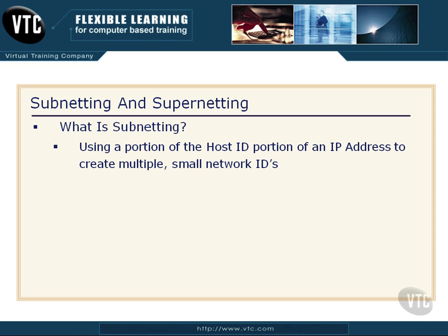Now, what is subnetting? Subnetting is when we're going to use a portion of the host ID part of our IP address to create even more smaller networks. We get assigned a public IP address, but it gives us a larger network than what we need. We need smaller networks that we can segment with routers — smaller subnets to control traffic, security, or whatever we want. Subnetting is where we take a single network, break it into smaller networks, and get that functionality. This is where the term subnet comes from.